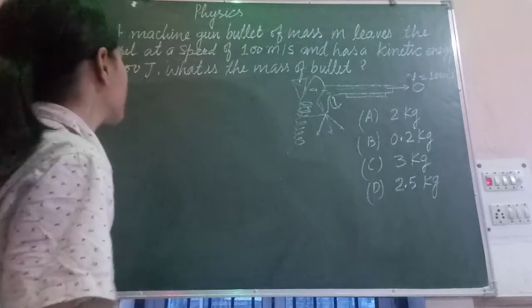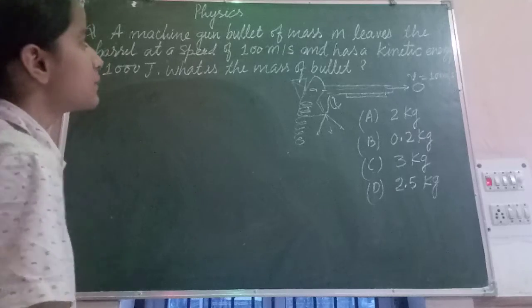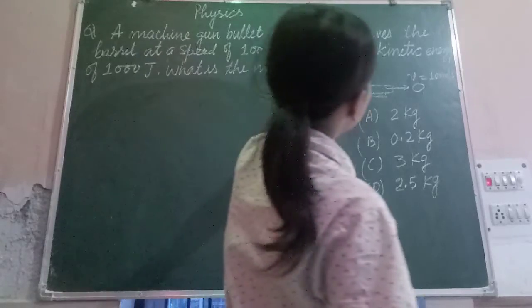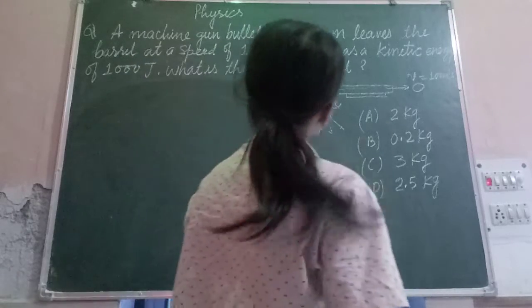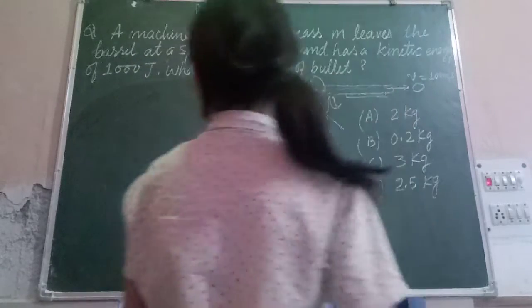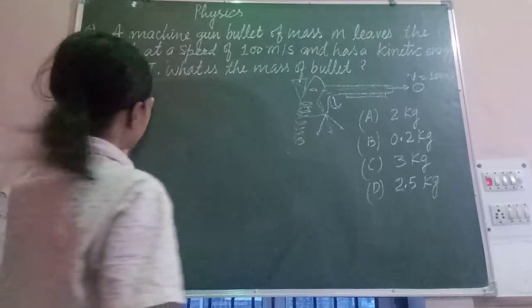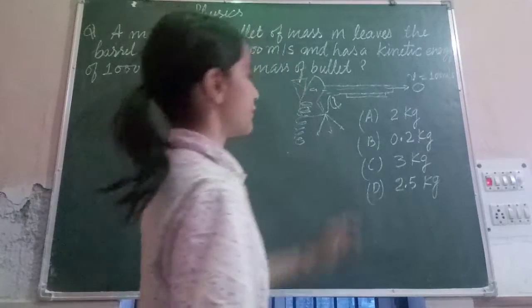The question is: a machine gun bullet of mass m leaves the barrel at a speed of 100 meters per second and has a kinetic energy of 1000 joules. What is the mass of the bullet?